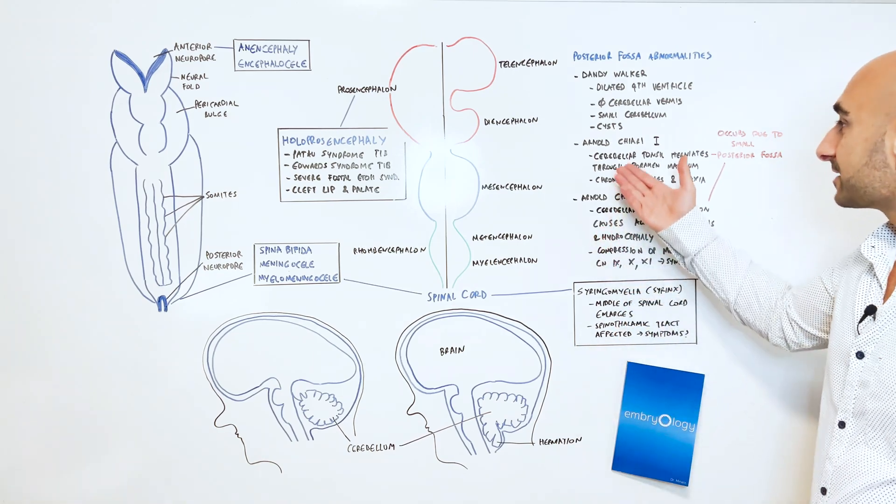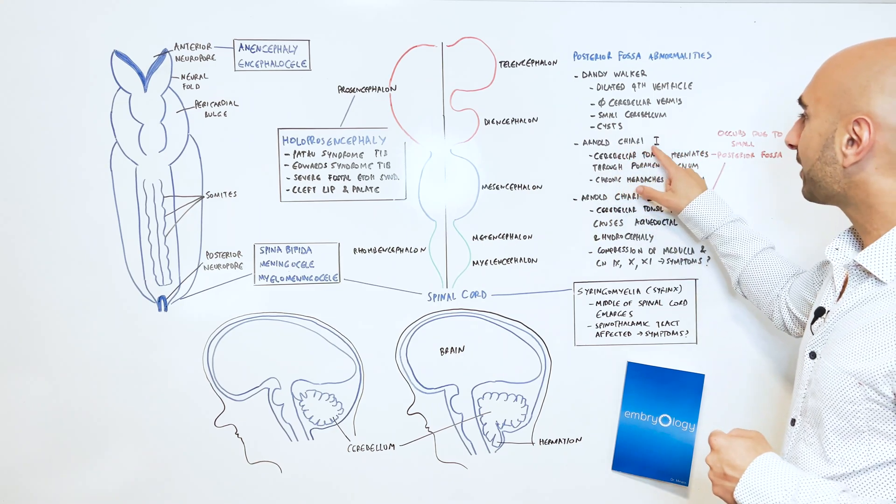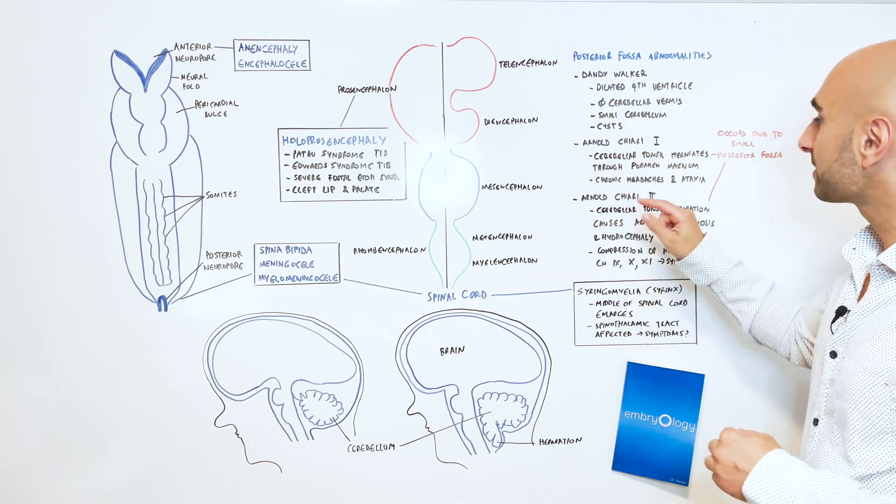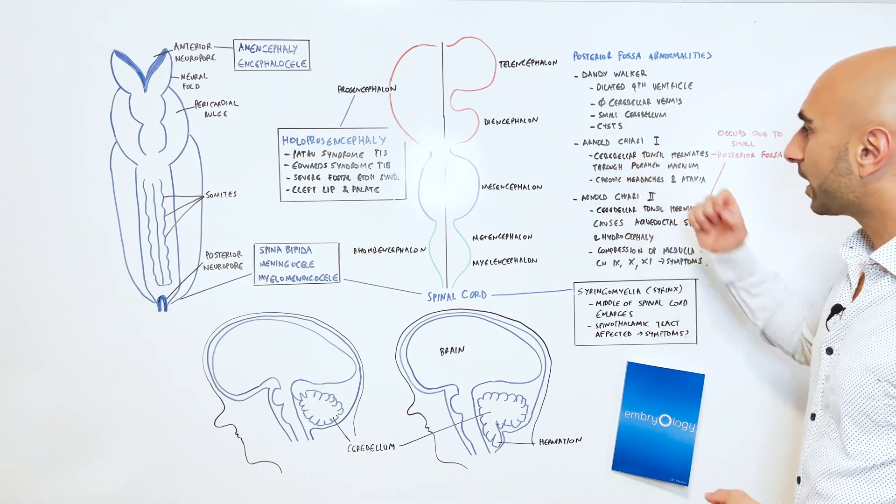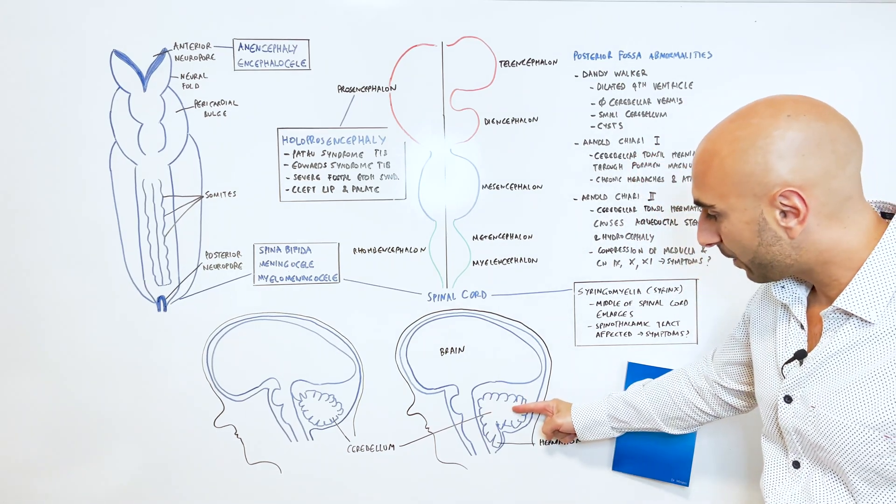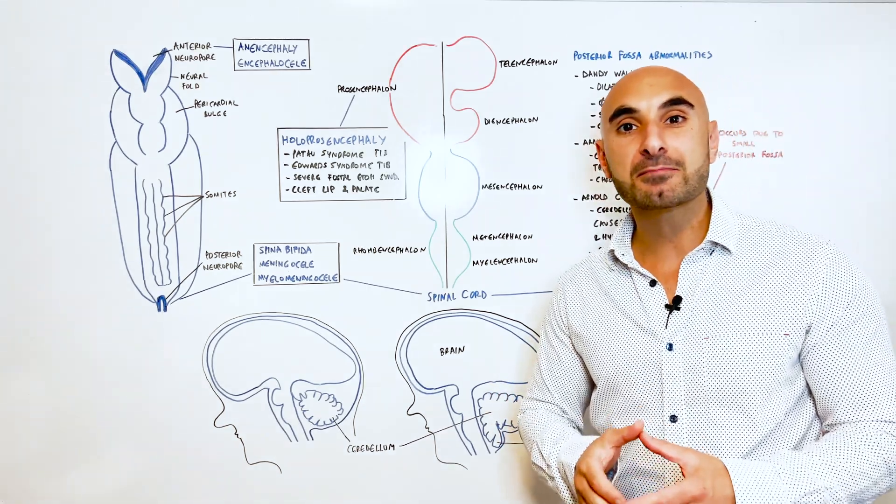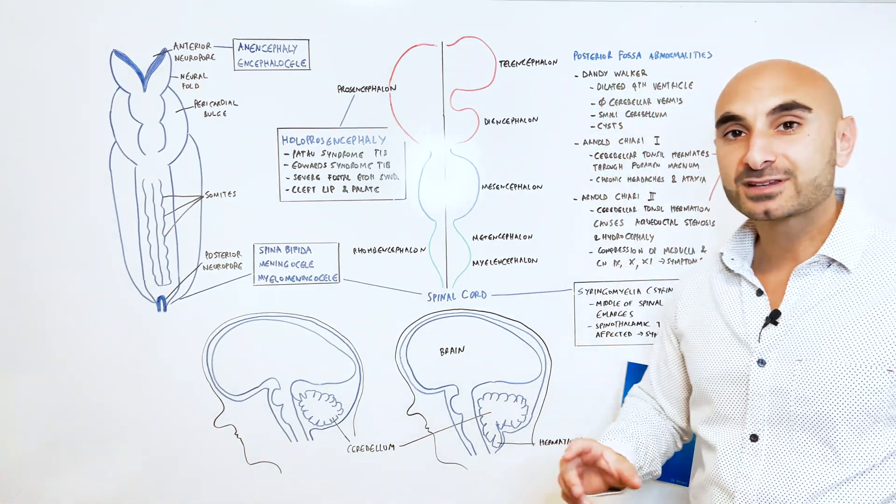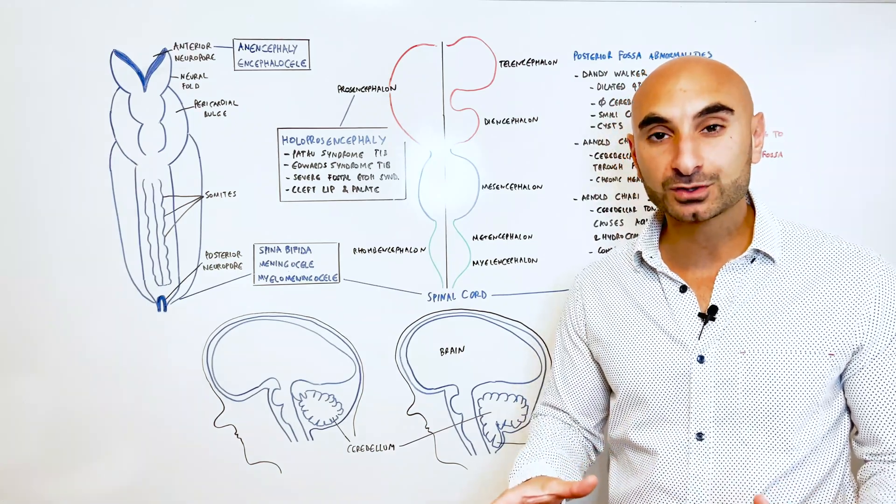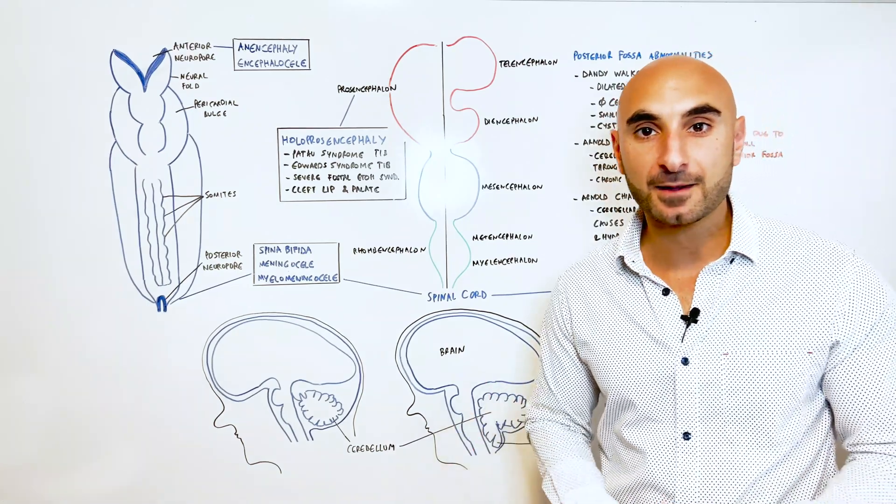The next syndrome is Arnold Chiari. Arnold Chiari 1 is less severe than Arnold Chiari 2. Arnold Chiari 1 occurs when the cerebellar tonsil herniates through the foramen magnum. And it may present as chronic headaches in adulthood and associated with symptoms of ataxia.